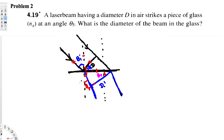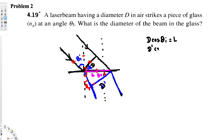If we call the length along the glass surface between where the two rays hit as l, then from the incident side: d = l · cos(theta_i), so l = d·cos(theta_i). From the refracted side: d' = l · cos(theta_r). Setting both equal to l, we get d·cos(theta_i) = d'·cos(theta_r). Solving for d': d' = d·cos(theta_i) / cos(theta_r).